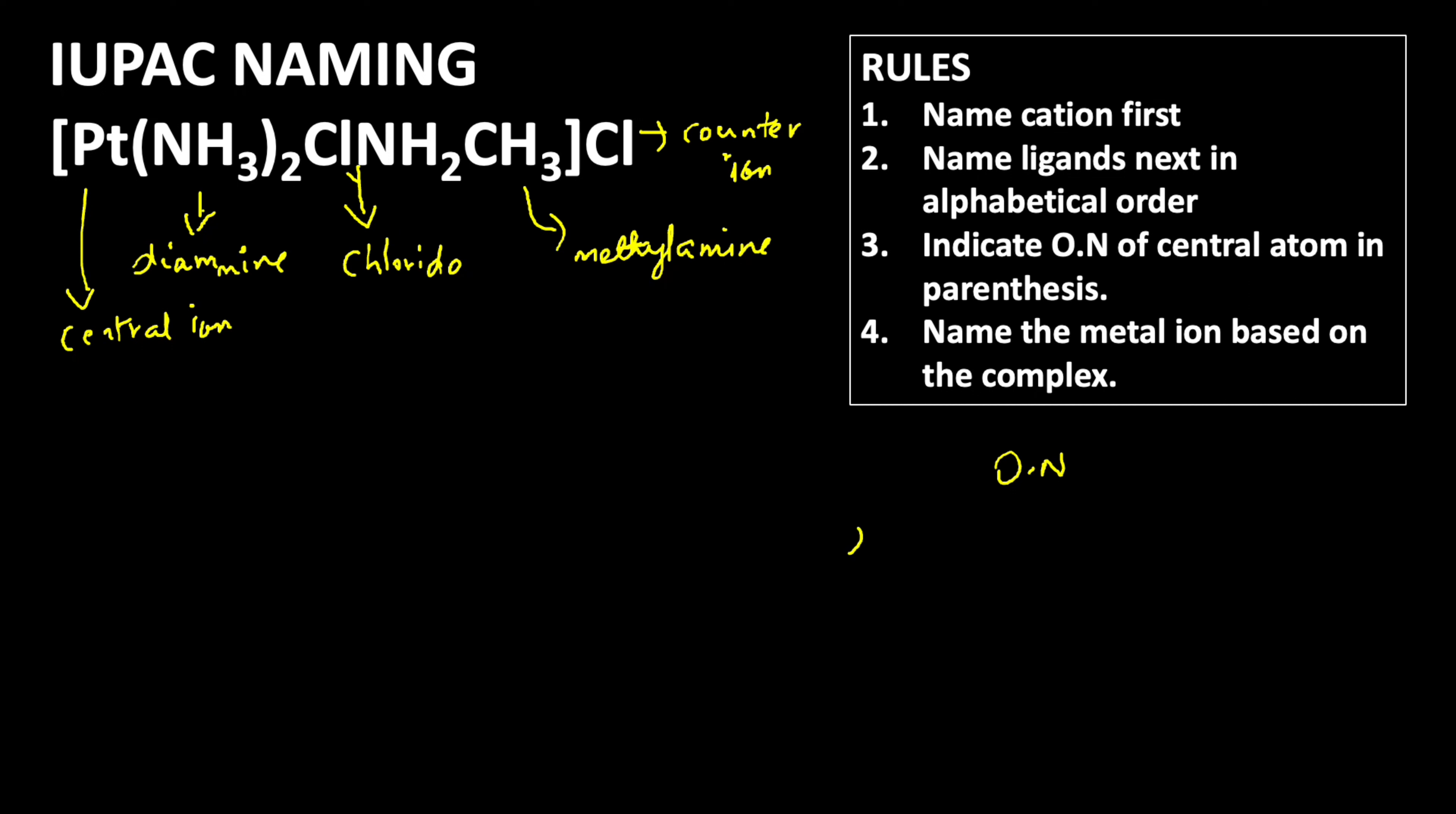Using the information, we're going to find out the oxidation number of platinum. Let us keep the platinum x. Then amine is a neutral ligand. There are two amine groups present, so two times zero. Then we have one chloride group, so one into its charge is minus one, plus methylamine is also a neutral ligand with charge zero, one times zero.